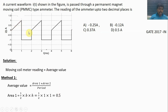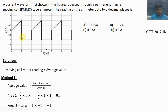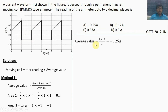For area 2, this is a rectangle, so the area of the rectangle is length times width. Length is 1 and width is 1, but the value is minus 1, so area 2 is minus 1. The average value equals area 1 plus area 2 divided by the period: 0.5 plus (minus 1), divided by 2. The answer is minus 0.25 ampere.